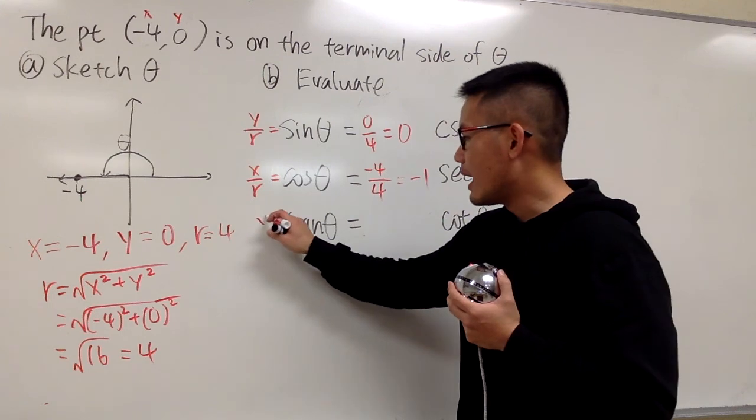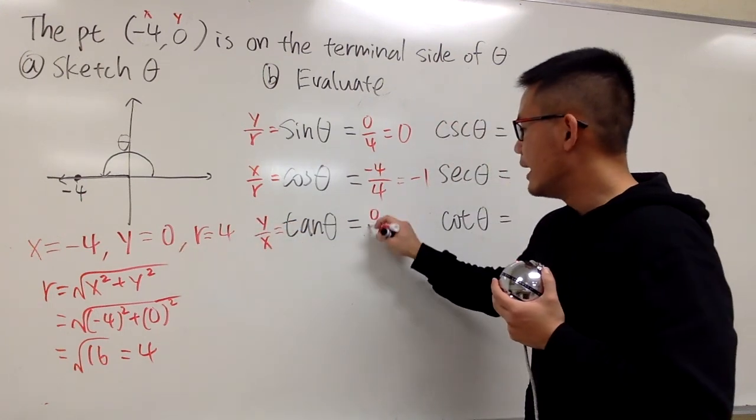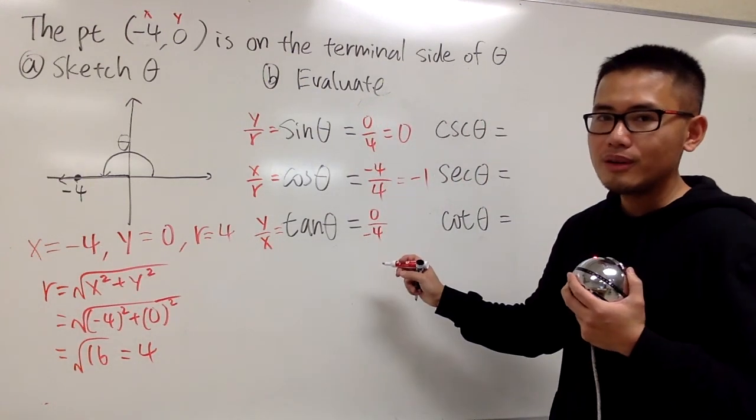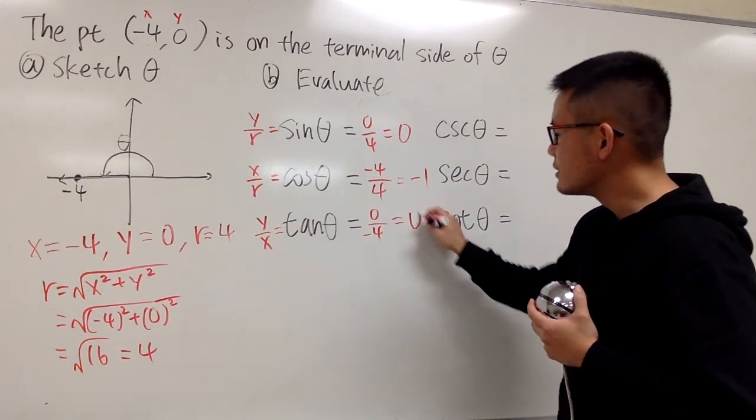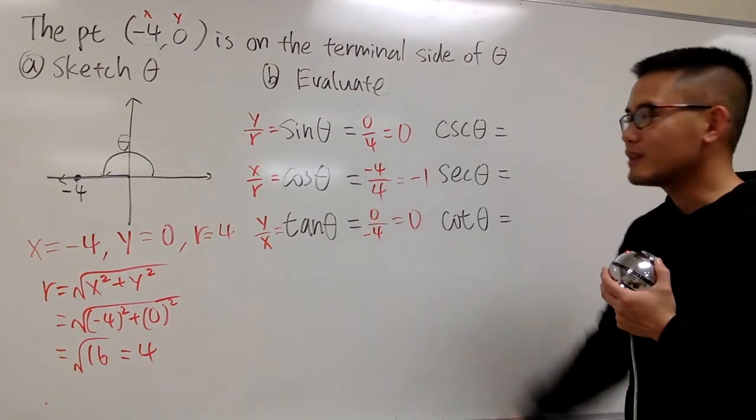Tangent is y over x. y is 0, x is -4. And we have 0 over -4. In this case, we end up with 0, it's a nice number. And this is pretty much it for these three functions.